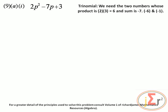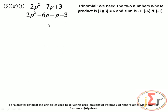We write the expression as a quadratic in four terms and use factorization by grouping. Taking the first two terms, we look for a common factor: 2 can go into 2 and 6, and p can go into p squared and p, giving a common factor of 2p. So 2p into 2p squared gives p, and 2p into 6p gives 3.